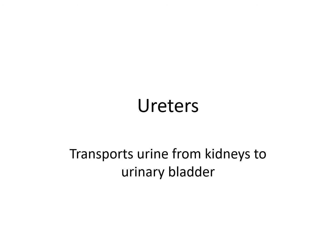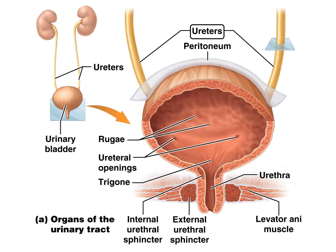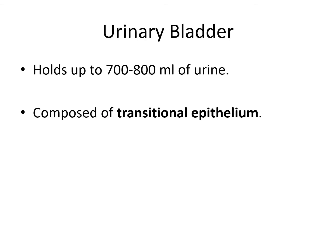The ureters transport urine from the kidneys to the urinary bladder, and they are composed of transitional epithelium. The urinary bladder is the hollow distensible organ that collapses when empty. It can hold 700 to 800 milliliters of urine and also includes transitional epithelium. This is usually the one example we provided in SCB 203 when discussing transitional epithelium.